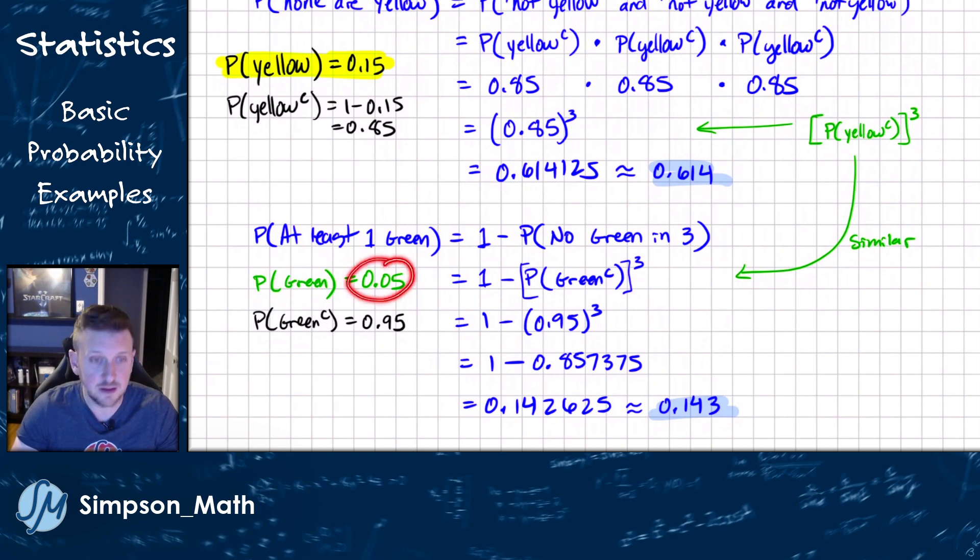So a similar idea of just doing one minus the probability of no green or green complement raised to the third. Well, we're told that green occurs 5% of the time. So the likelihood I don't get a green is 95%. One minus that. So 0.95 cubed gives us this 85ish percent number. So one minus it and we get about 14.3% or 0.143.